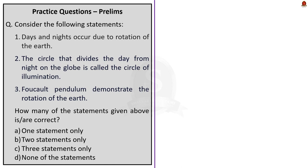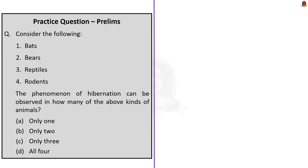Moving on, the next question has three statements. Statement 1: days and nights occur due to the rotation of the earth — this statement is correct. Statement 2: the circle that divides the day from night on the globe is called the circle of illumination. Statement 3: the Foucault pendulum demonstrates the rotation of the earth — this statement is also correct. So the correct answer is option C, all three statements. The next question asks you to find which animal observes hibernation. Four animals are given: bats, bears, reptiles, and rodents. All of them undergo hibernation during winter, so the correct answer is option D, all four.